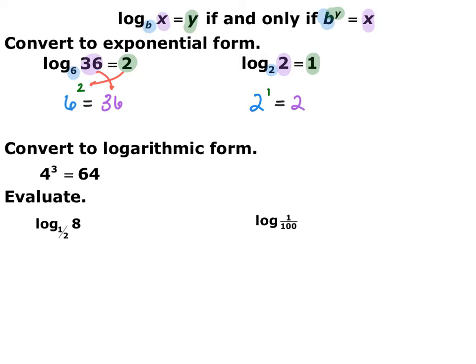The answer to a logarithm is the exponent. This question is asking: what do I raise 6 to to get 36? I raise it to the second power. For the second one, log base 2 of 2 equals 1: the base of my exponent is 2, the exponent is 1, and the answer is 2. What do I raise 2 to to get 2? I raise it to the power of 1.